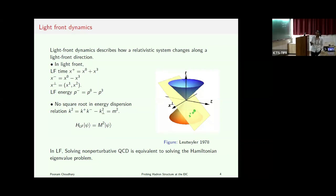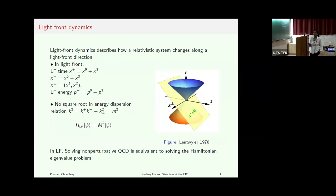The framework is light-front dynamics. Light-front dynamics describes how a relativistic system changes along the light-front direction. In this frame, we redefine variables like the light-front time, defined in terms of t plus the third component of space, and X-minus is defined by the difference of these two. X1 and X2 are transverse components. Similarly for momentum components, there are P-plus, P-minus, and P-perp. There are certain benefits to working in the light front, such as the energy dispersion relation having no square root involved.